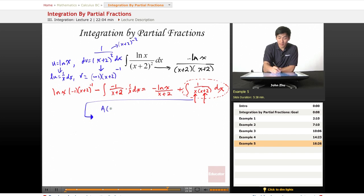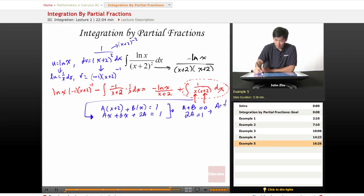So a times x plus 2 plus b times x equals 1. So then we have a times x plus b times x plus 2a, which equals 1. So we have here our a plus b is equal to 0 and 2a is equal to 1. Now we get something like a equals 1 half and b equals negative 1 half.